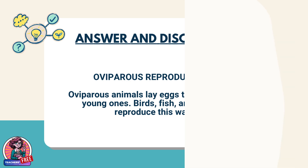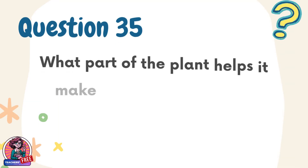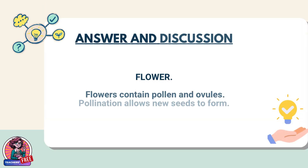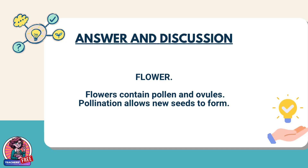Question 35. What part of the plant helps it make more of its own kind through pollination? Answer: Flower. Flowers contain pollen and ovules. Pollination allows new seeds to form.